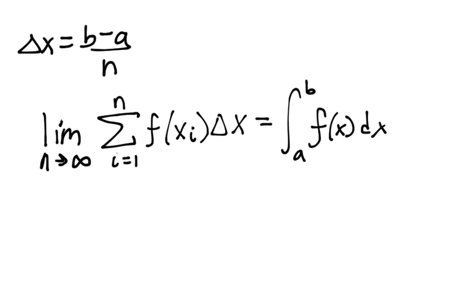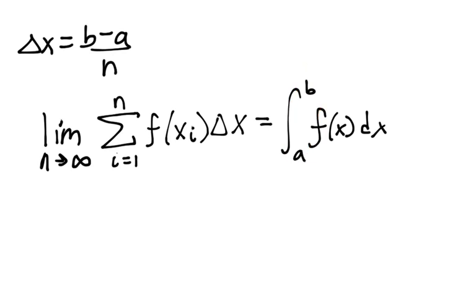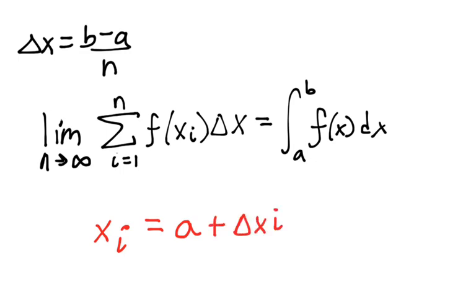One addendum to this definition that may help is an expansion on what we mean by x sub i. So x sub i is a value in the interval — in a sub-interval within delta x — and that sub-interval is an interval of the interval from a to b. It may help to think about x sub i, or really x in general, as starting at a and then slowly incrementing your way up toward b. The amount you add is called delta x.